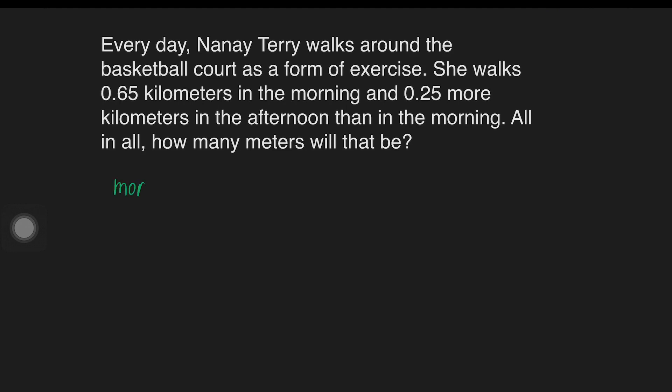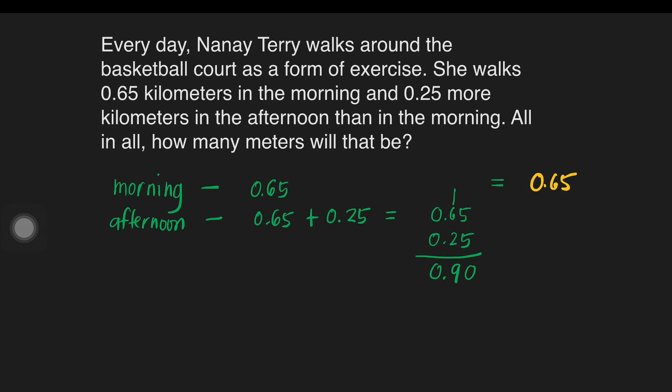So, in solving this problem, first we need to write the number of kilometers Nanay walked. That is 0.65. And then now, we can write also the afternoon which is 0.25 kilometers more than what is in the morning. So, just simply write 0.65 plus 0.25. Getting the sum will get 0.90. That is for the afternoon. So, in order to get the number of kilometers Nanay walks, we will now add the morning and the afternoon. For the morning, that is 0.65 and the afternoon, that is 0.90. That will give us 1.55 kilometers.